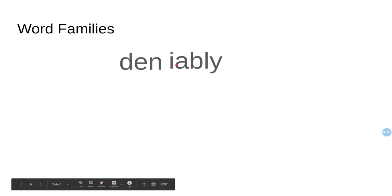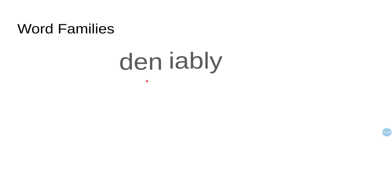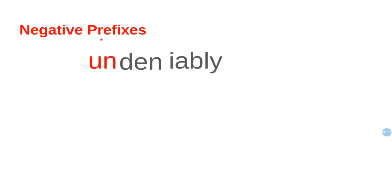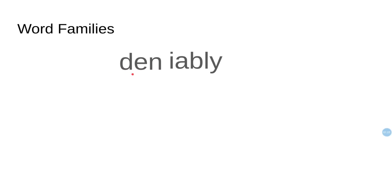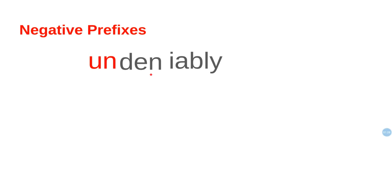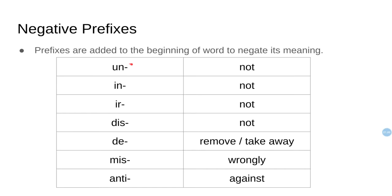Today we're going to learn about negative prefixes. Prefixes occur at the beginning of a word, and the ones we're learning today are negative, meaning they turn the word into its opposite. So 'deniably' is something I can deny; 'undeniably' is something I can't deny — it becomes negative, like 'not deniably.'